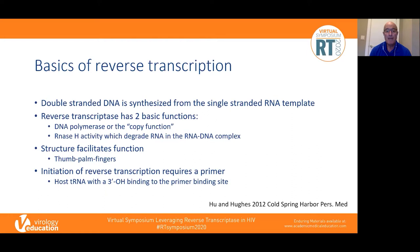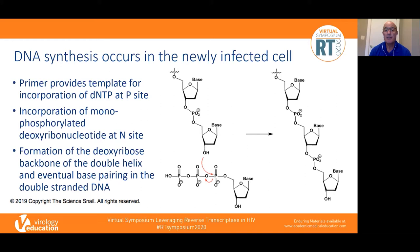This activity is facilitated by reverse transcriptase function, which has a thumb-palm-finger structure. Critically, initiation of reverse transcription requires a primer, and within the cell there's host transfer RNA with a three-prime hydroxy group that binds to the primer binding site and initiates reverse transcription. DNA synthesis occurs in the newly infected cell, and I just wanted to put in some nice pictures that show how the process normally occurs.